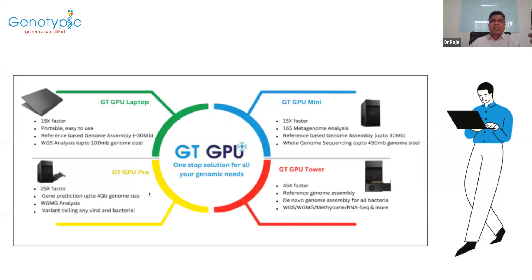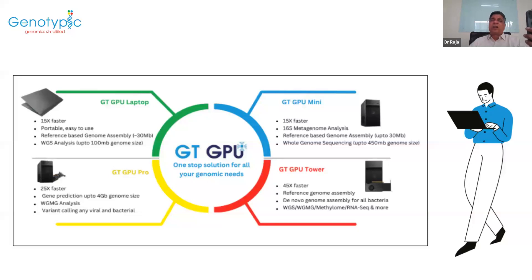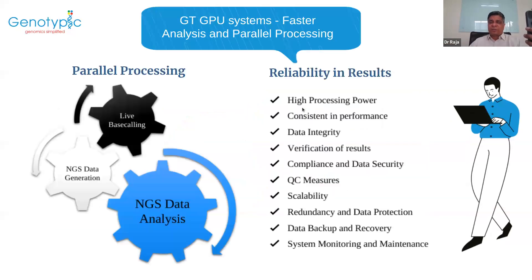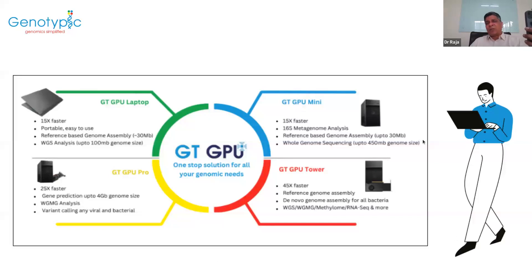We've generated different systems. From the top left there is a laptop system — ideal for people using nanopore technology or traveling. It's loaded with storage, can run PromethION or MinION easily, and it's a laptop-based GPU system. Then there's the GT GPU Mini, a standalone machine that sits in a lab. Then there's the GT GPU Pro and the GT GPU Tower, which is almost built like a supercomputer — 45x faster than a CPU server. What a CPU server does in two days, this GPU tower does in one to two hours.